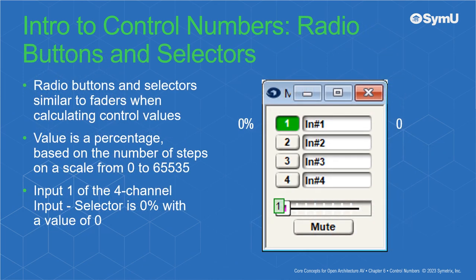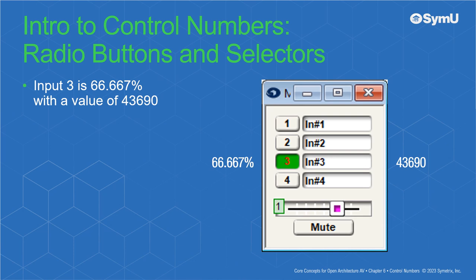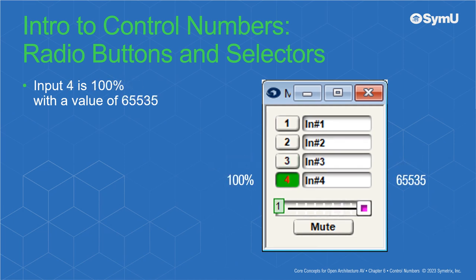Radio buttons and selectors are similar to faders when calculating control values. The value is a percentage based on the number of steps on a scale from 0 to 65535. In this example of a 4-channel input selector: input 1 is 0% with a value of 0; input 2 is 33.333% with a value of 21845; input 3 is 66.667% with a value of 43690; and input 4 is 100% with a value of 65535.